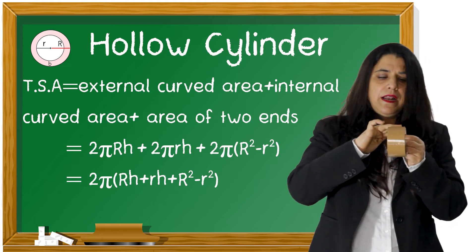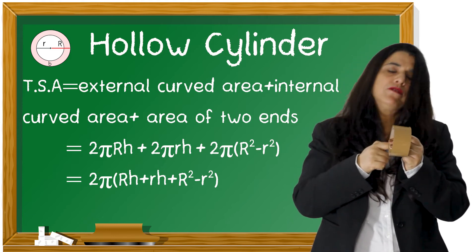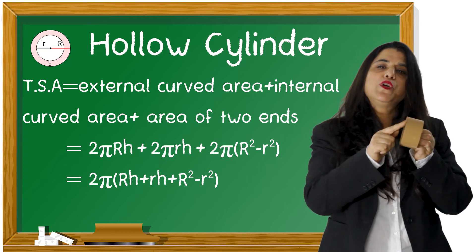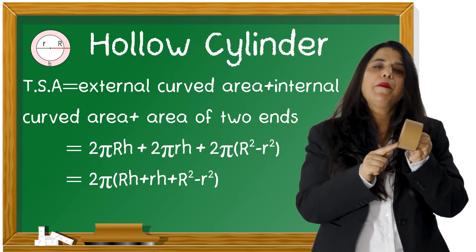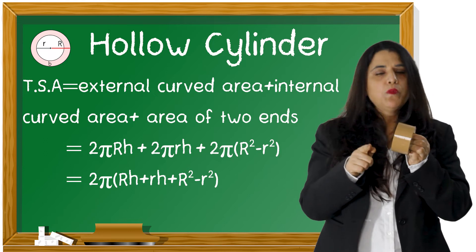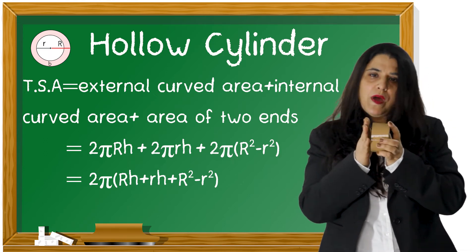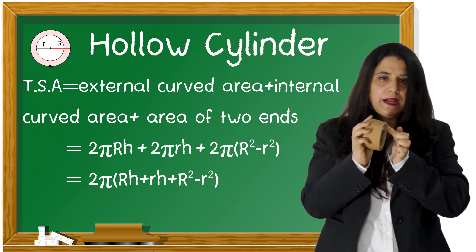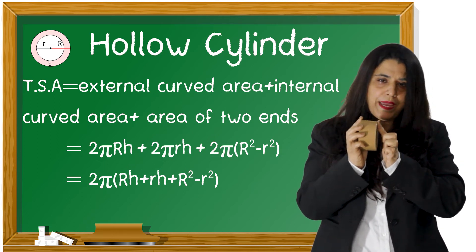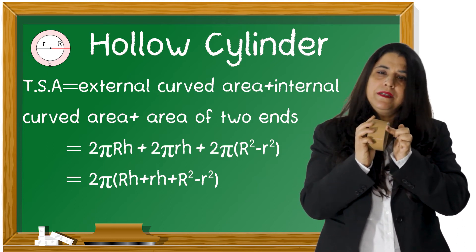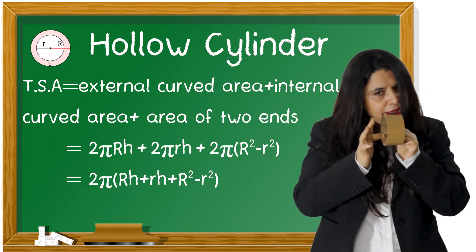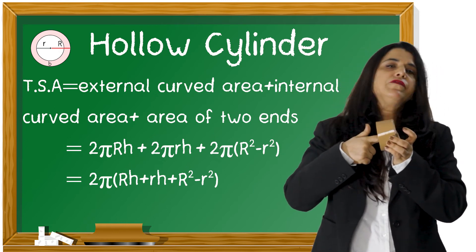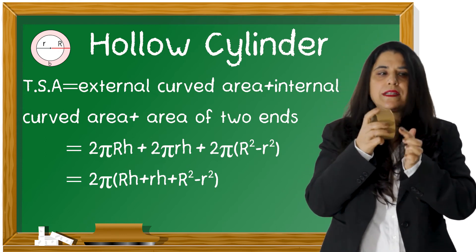So we will add all these areas: 2 pi capital R H plus 2 pi small r H plus area of cross section, which is equal to pi into capital R square minus small r square. So 2 pi capital R H is the external curved surface area, 2 pi small r H is the internal curved surface area, and then we add the area of these two rings.